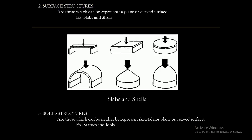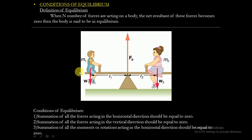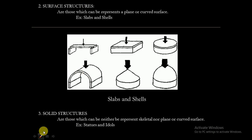The next type is surface structures. Surface structures are structures which represent a plane or a curved surface. A plane surface has very less thickness compared to its other dimensions. These are nothing but plates or shells. A slab is considered as a plane or shell structure.